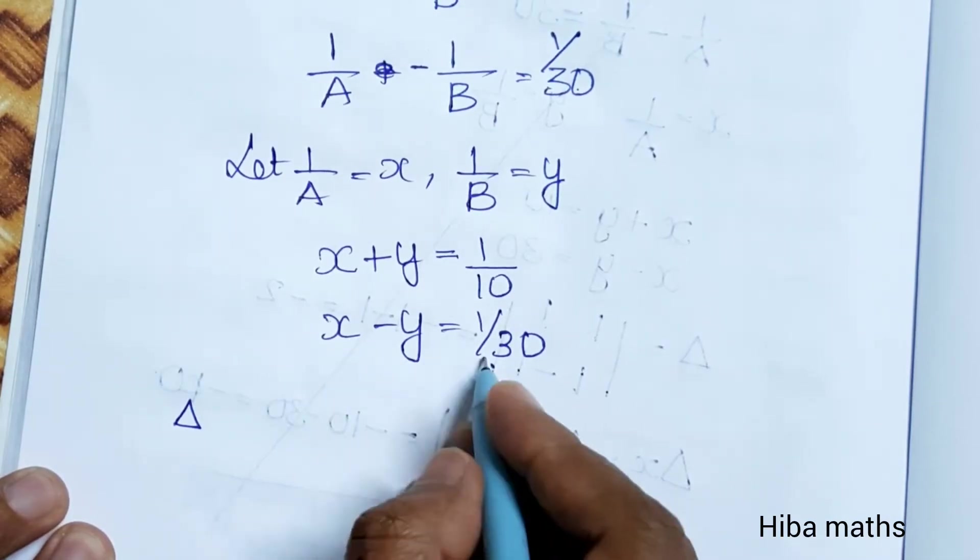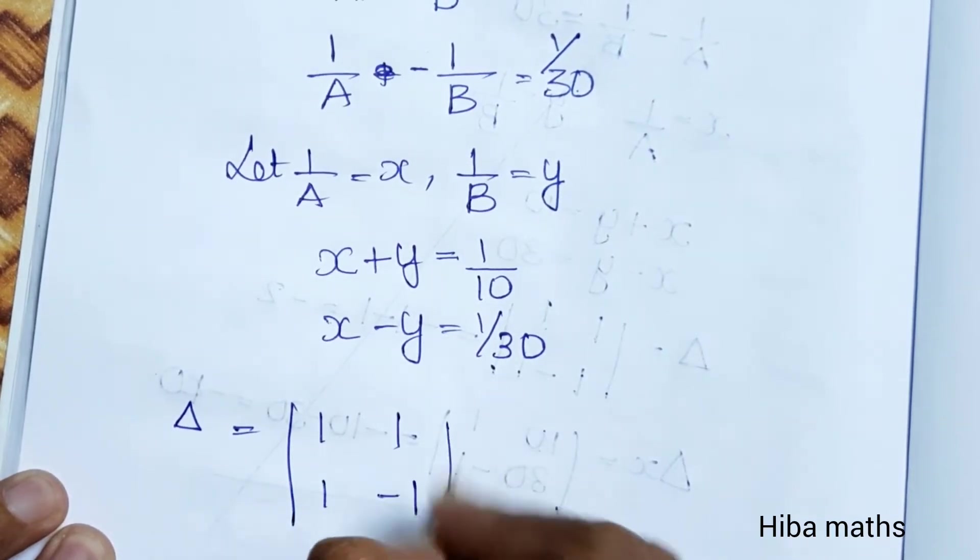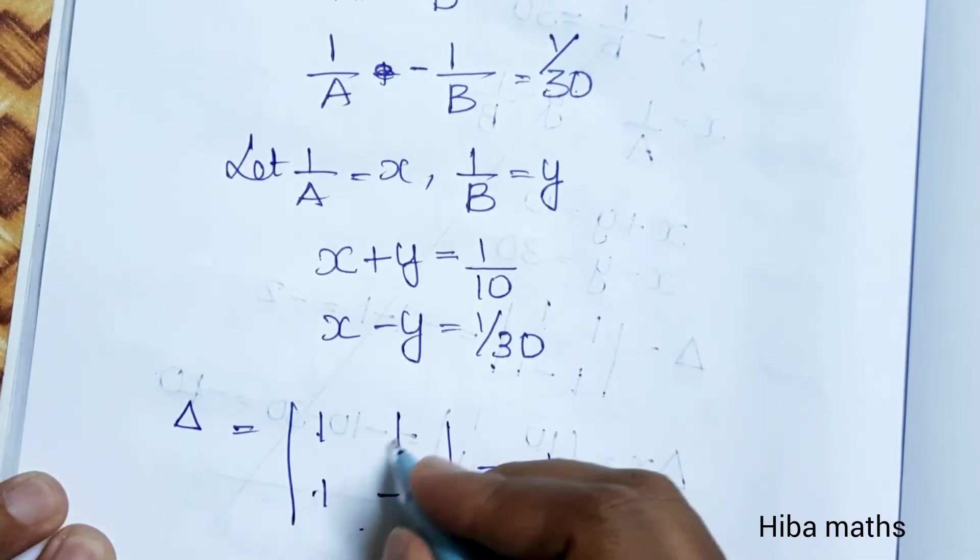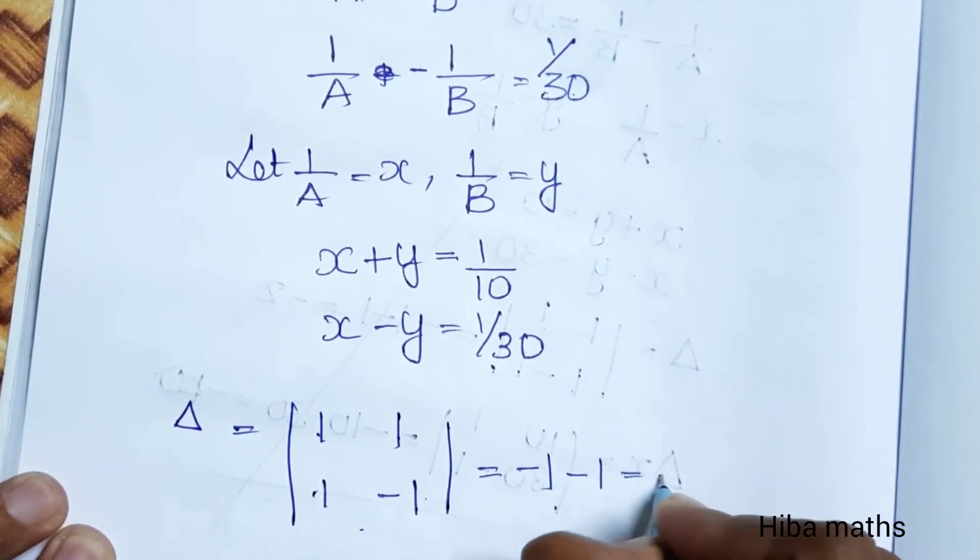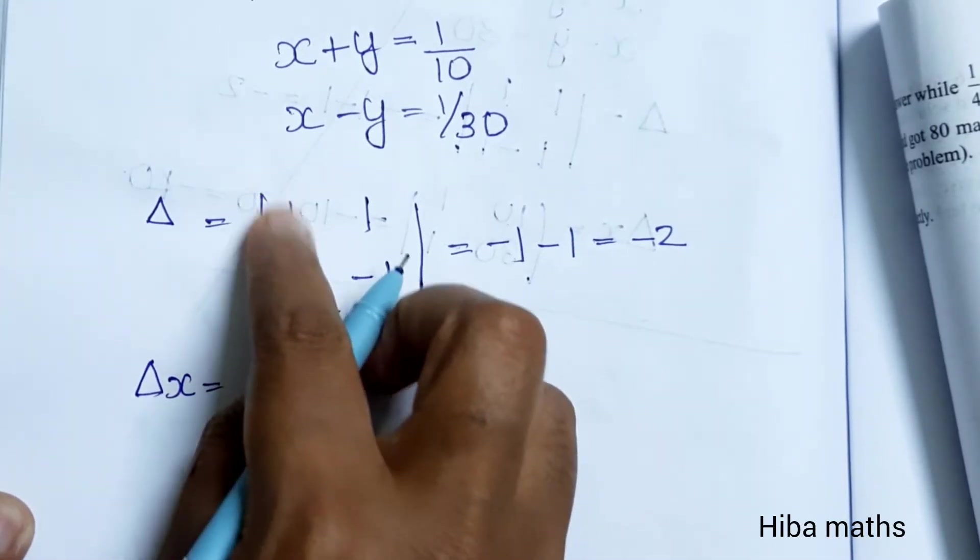Now we have x minus y equals 1/30. The determinant delta equals 1, 1, 1, minus 1. The coefficient determinant equals 1 times minus 1 minus 1 times 1, which equals minus 1 minus 1, so the answer is minus 2. This is the determinant.